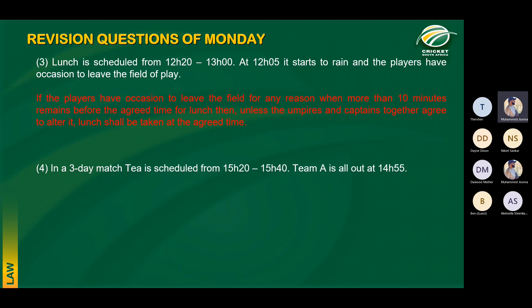Question four: in a three-day match, tea is scheduled from 15:20 to 15:40 — a 20-minute interval. Team A is all out at 14:55. If an innings ends when 30 minutes or less remains before the agreed time for the tea interval, the interval shall be taken immediately, shall be of the agreed duration, and shall be considered to include the 10-minute interval. So the 10 minutes for change of innings is absorbed within the 20-minute tea interval.